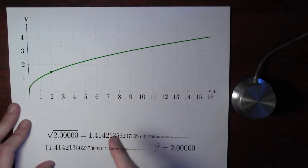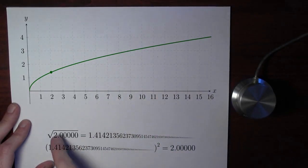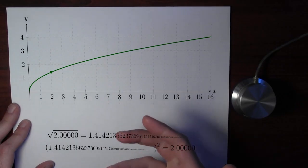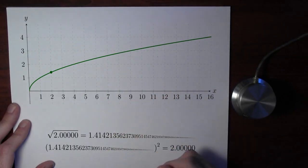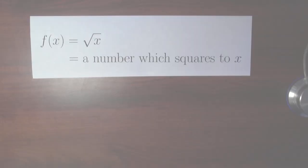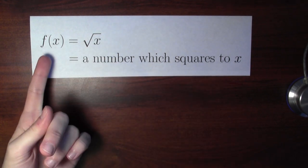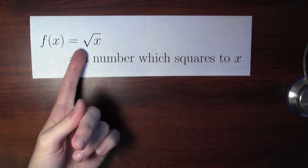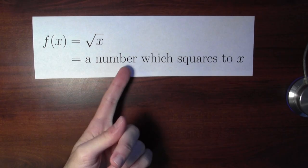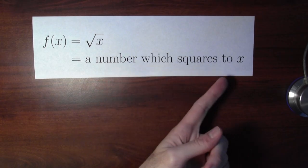Here's the question: what sorts of numbers can I take the square root of? That's asking the question, what's the domain of the square root function? Now that we've seen the graph, let's try to write down a definition of the square root function. In light of what we've just seen, you might think the square root of x is a number which squares to x.